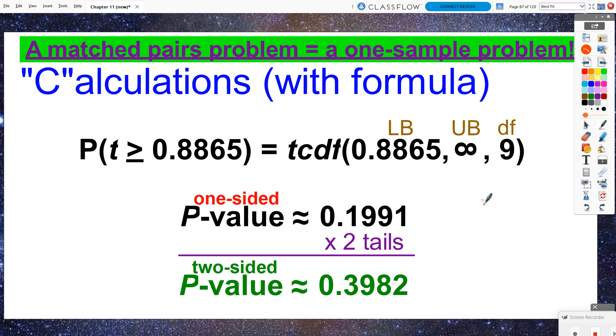I take that positive 0.8865. I want to find other test statistics that are greater than or equal to. If that had been a negative test statistic, then I would have done less than or equal to. I start at my positive 0.8865, shoot up to infinity, and I'm back to basically another one sample problem. So the degrees of freedom are just the sample size minus one.